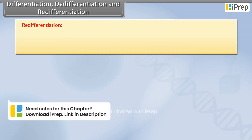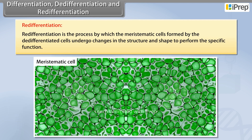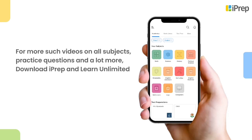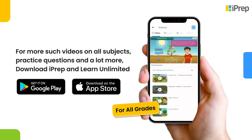Re-differentiation is the process by which the meristematic cells formed by de-differentiated cells undergo changes in structure and shape to perform a specific function.